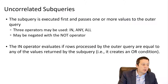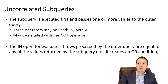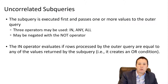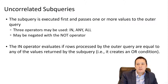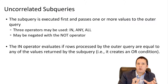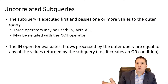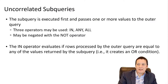We'll start with uncorrelated subqueries, where the inner query executes first and passes one or more values to the outer query. Typically we use one of these operators: IN, ANY, or ALL — and we can negate these with the NOT operator. The IN operator evaluates whether rows processed by the outer query are equal to any of the values returned by the inner subquery.